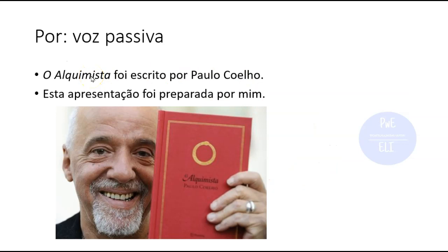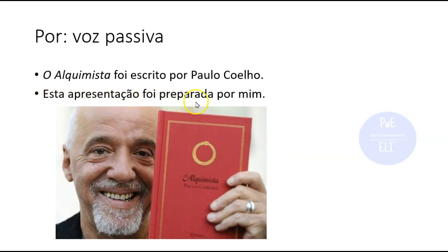POR also indicates the passive voice in Portuguese. In English we say 'this was done by someone' — in Portuguese it's always POR. 'O alquimista foi escrito por Paulo Coelho' — The Alchemist was written by Paulo Coelho, a very good book. 'Esta apresentação foi preparada por mim' — this presentation was prepared by me.